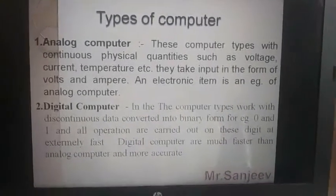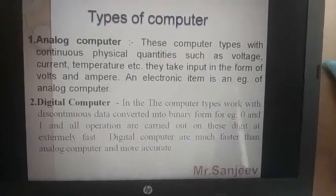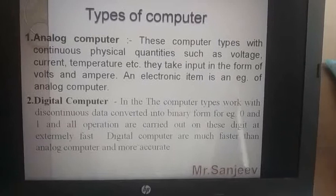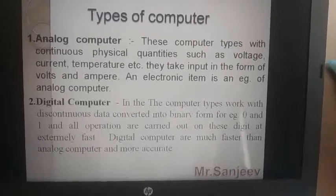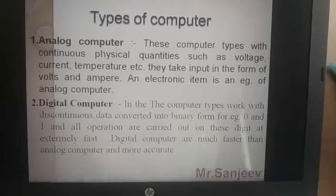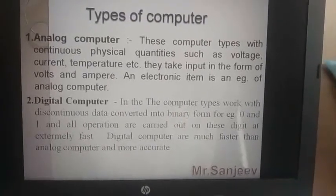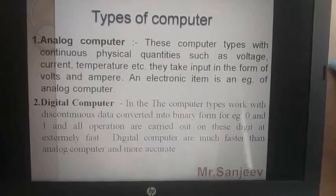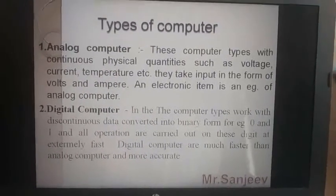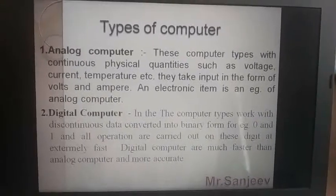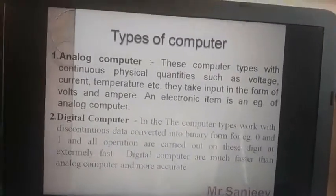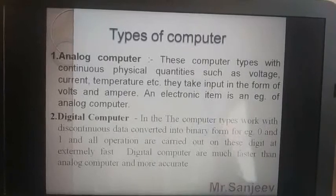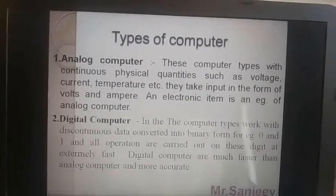Second: digital computer. This computer type works with discontinuous data converted into binary form — for example, 0 and 1. All the operations are carried out on these digits and extremely fast. Digital computers are much faster than analog computers and more accurate. Digital computer کے اندر کام 0 and 1 form میں ہوتا ہے — 0 and 1 کو ہم binary form کہتے ہیں۔